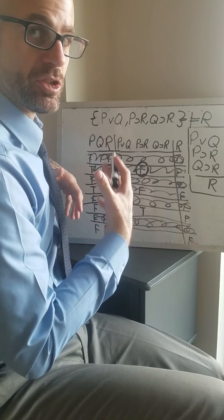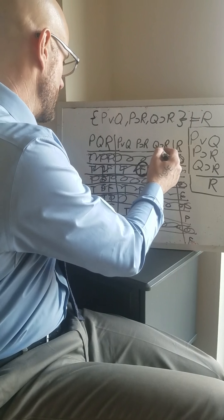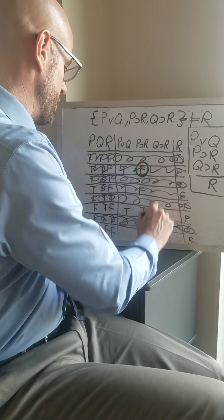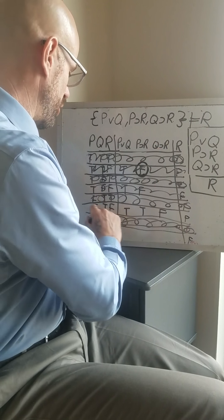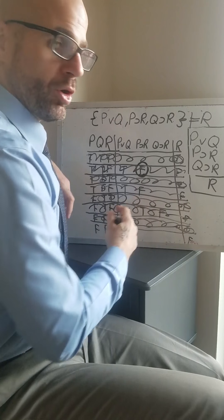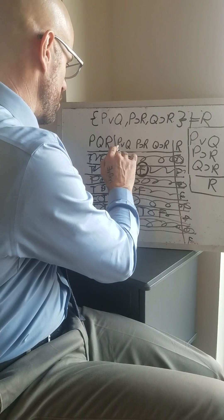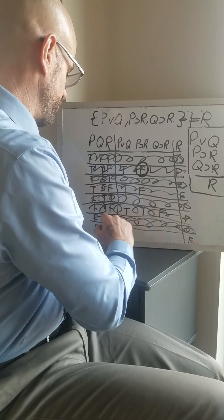Now, how about here? Q therefore R. Well, Q is true and R is false. So again, we have a false premise. This row is not going to be a counter example either.